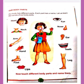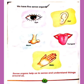Now touch different body parts and name them. We are going to learn organs. Let's learn the concept of sense organs. We have five senses, as you know. They are eye, ear, nose, tongue, and skin.